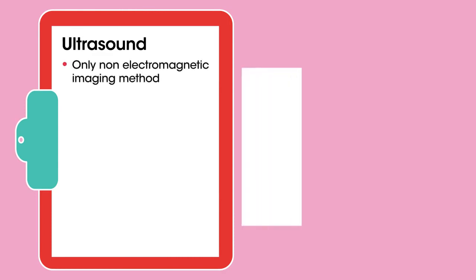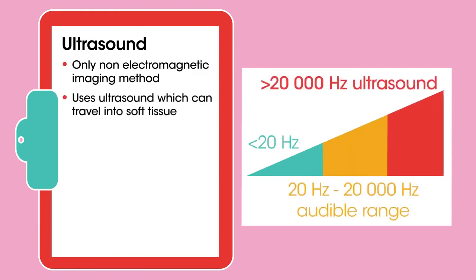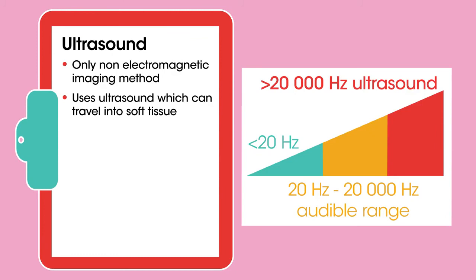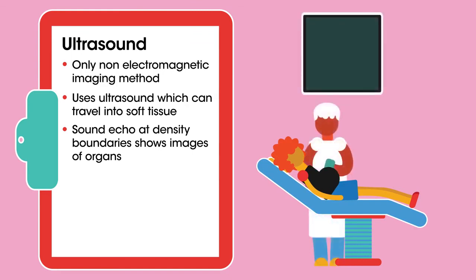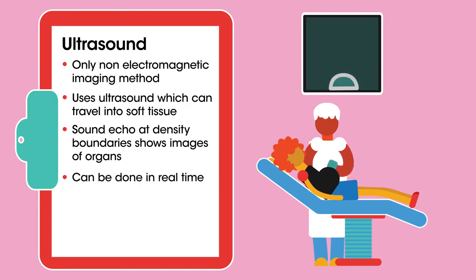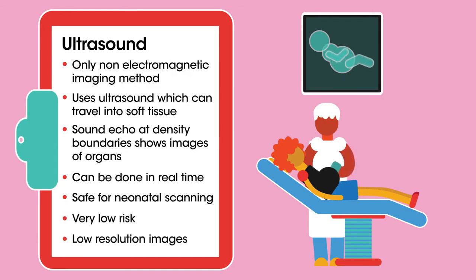Ultrasound. This uses a sound frequency well above the human hearing range. This technique relies on the emission and subsequent detection of ultrasound waves which penetrate soft tissue. They are reflected where organs change density and this echo is used to build up a low-quality, real-time image of organs, and is commonly used in obstetrics to view the unborn baby. Quick, inexpensive, very low risk.